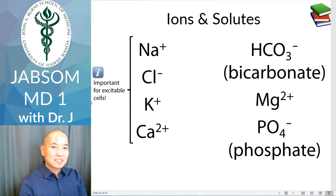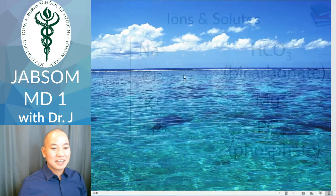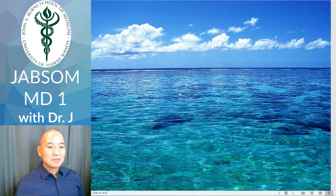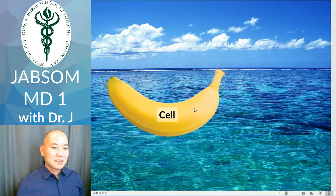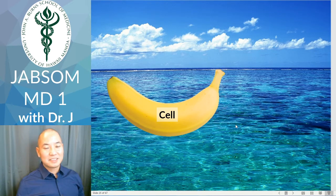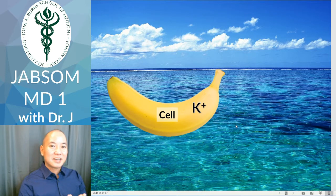Here's how I memorize this — I use this little analogy. We have the ocean, and I'm going to throw a banana into it, where the banana represents a cell at rest. What mineral is found in abundant quantities in bananas? Potassium. So at rest, a cell has a higher potassium concentration than the surrounding fluid.